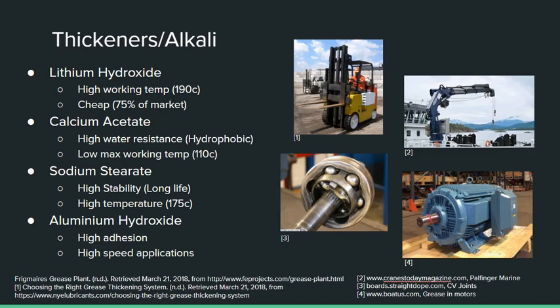Thickeners change the properties of the grease the most out of all the other ingredients. The most used one is lithium hydroxide, which takes up 75% of the grease market, pretty much because it's so cheap. It also has a high working temperature of 109 degrees Celsius, making it good for most industrial purposes — for example, a forklift would ensure it has lithium hydroxide, making it lithium grease.